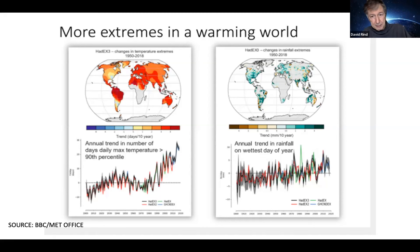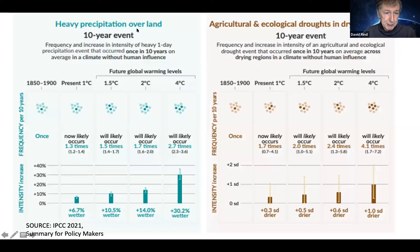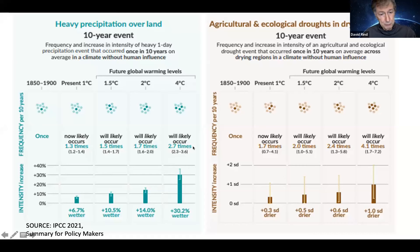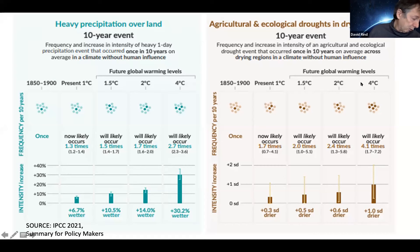We can also look at heavy precipitation and drought forecasts over land. Just as with high temperatures, as you go to different warming scenarios, the increase of 10-year precipitation events and 10-year agricultural drought events goes up accordingly. With a 4-degree warming, a 10-year event of heavy rain would now be happening 2.7 times, and a 10-year drought event would be happening 4 times. Pretty sobering were we to get to 4 degrees C global warming.